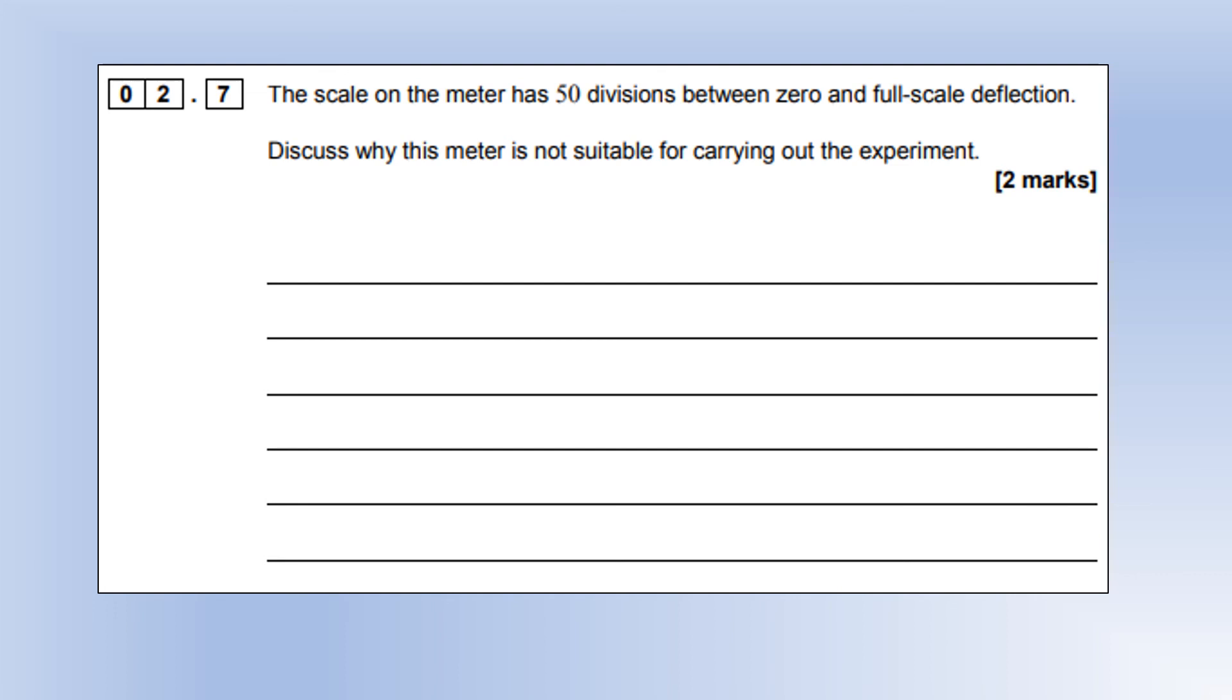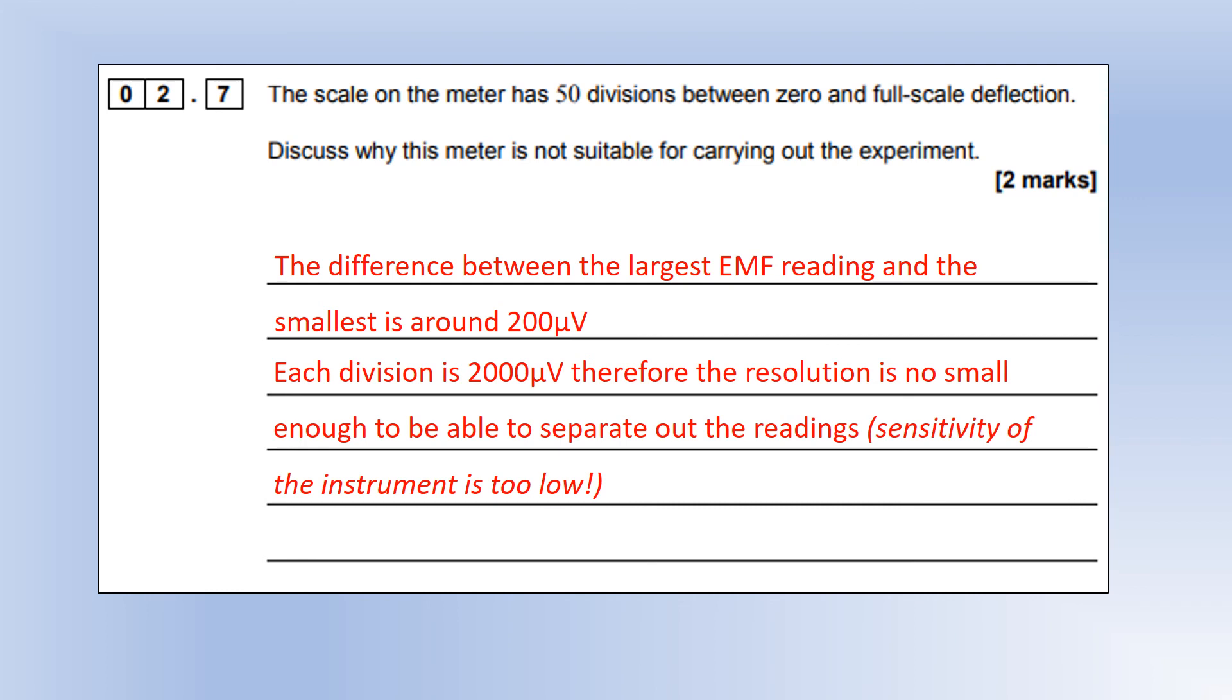The scale has 50 divisions between 0 and full scale deflection. Discuss why this meter might not be suitable for carrying out the experiment. The way I thought about this: the difference between the largest EMF reading and the smallest is 200 microvolts. Each division is going to be 2000 microvolts because it's 10⁵ divided by 50 divisions. So the resolution is going to be way too small to be able to separate out the readings - they're all going to be between two divisions. Another way we could describe that is the sensitivity of our instrument is far too low. That finishes section A.